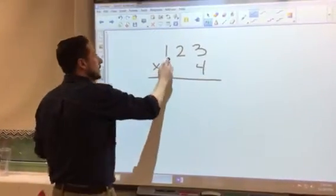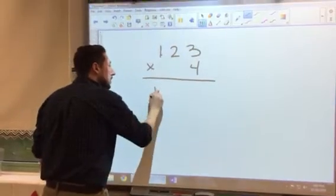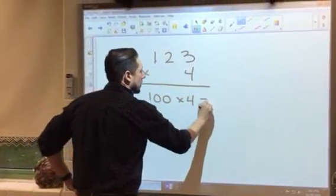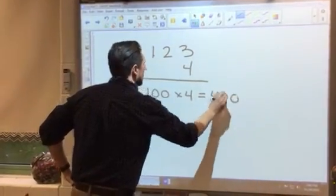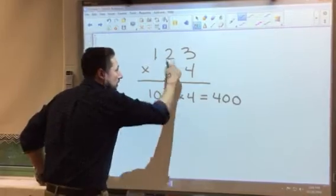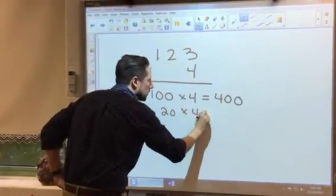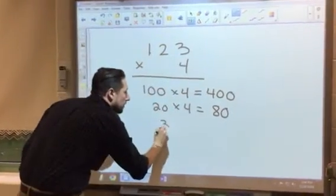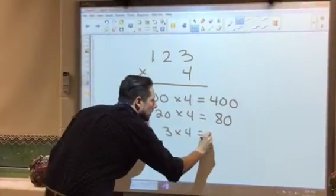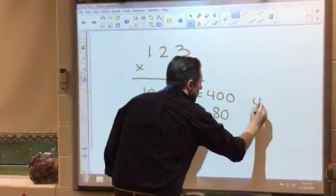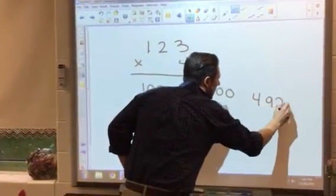Now we're going to say that this is not a 1, this is 100. So 100 times 4 gives us 400. This is not 2 but 20 times 4 which is 80, and this is just 3. 3 times 4 is 12. We add these up and get 492 as our answer.